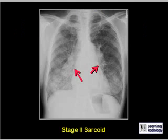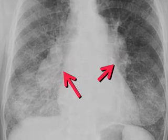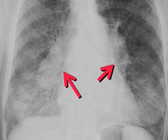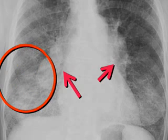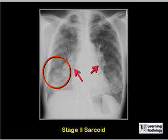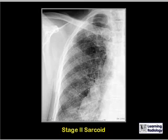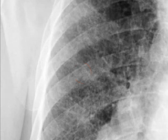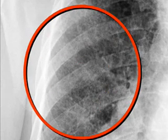This is a frontal radiograph of a patient with stage 2 sarcoid. The red arrows point to the bilateral hilar adenopathy, and the red circle highlights the reticular interstitial disease that marks this as stage 2 sarcoid. A close-up of the same patient shows innumerable interstitial lines that make up the parenchymal disease.